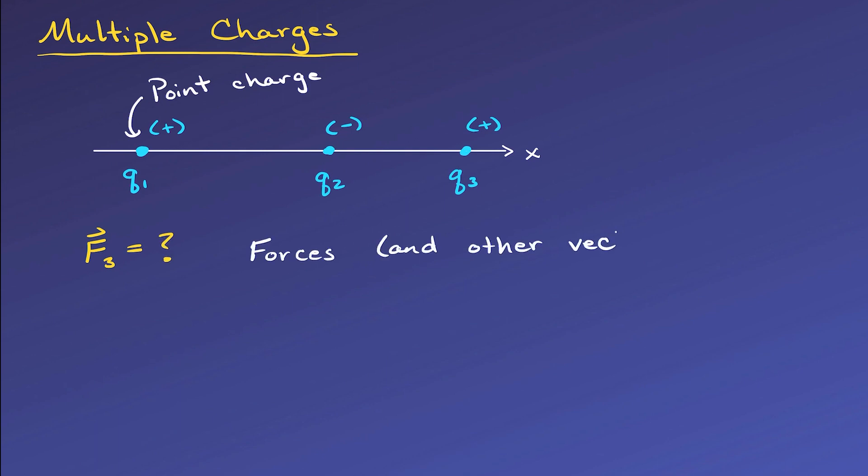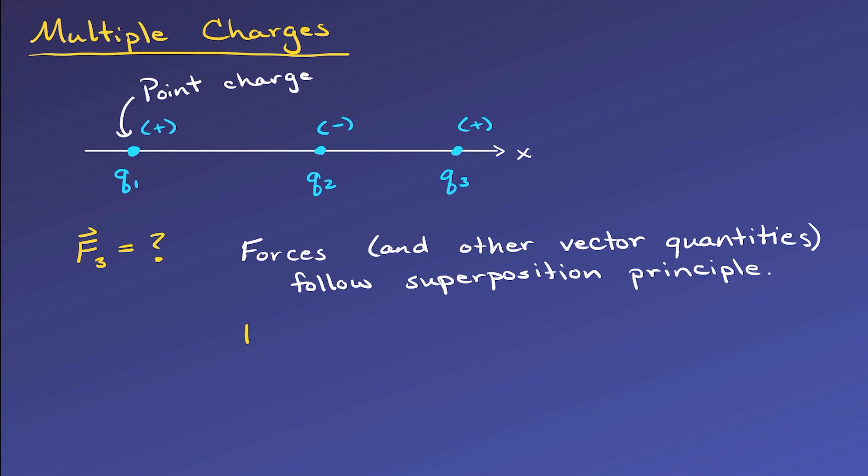Well, forces, like other vector quantities, follow the superposition principle, which means to get the overall force on q3, or the net force, we can just add each individual force that we can find using Coulomb's law. So the net force on q3 will be the force from charge 1 on charge 3, plus the force from charge 2 on charge 3.